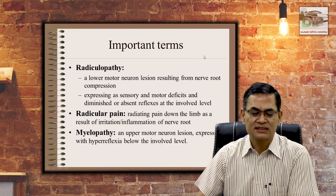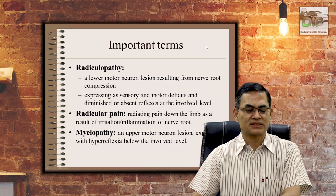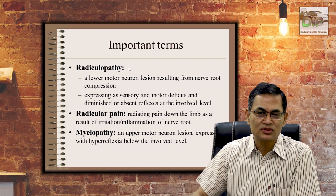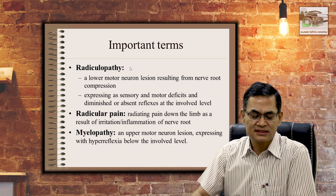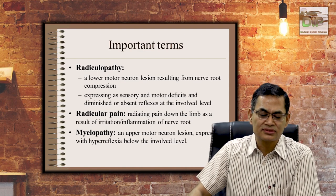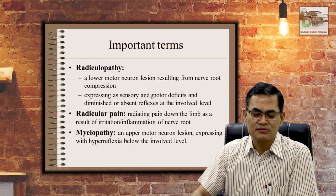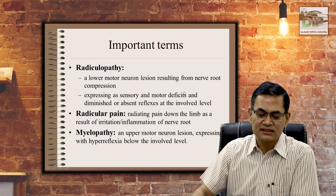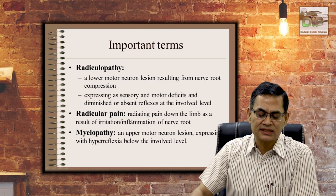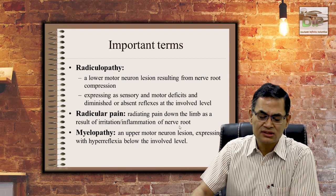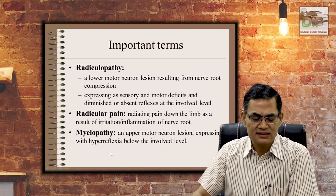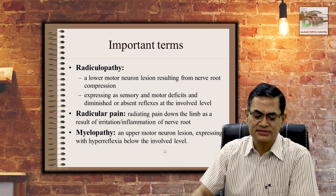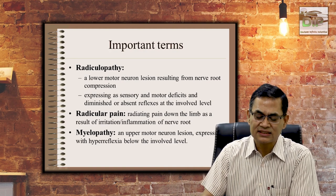There are three terms we need to understand, as they are used frequently when discussing spinal disease. Radiculopathy is a lower motor neuron lesion from nerve root compression, expressed as sensory and motor deficits and diminished or absent reflexes at the involved level. Radicular pain is radiating pain down the limb due to irritation or inflammation of the nerve root, occurring in upper or lower limbs. Myelopathy is an upper motor neuron lesion expressed as hyperreflexia below the involved level, caused by compression of the cord rather than the spinal nerve.